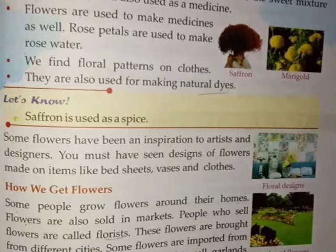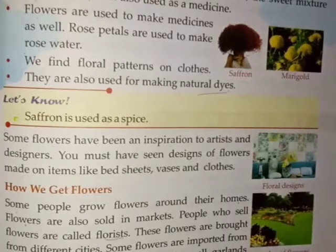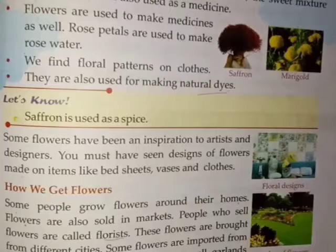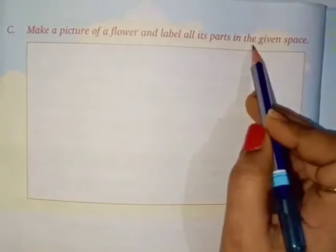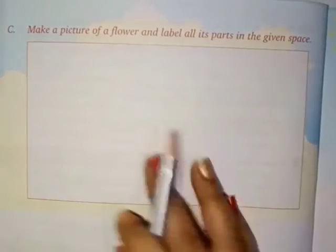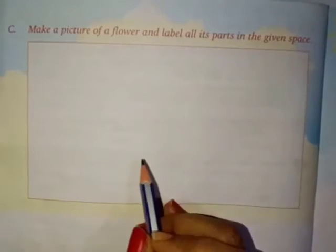That completes your lesson on flowers and their uses. For your activity, go to page number 72, activity C. Make a picture of a flower and label all its parts in the given space, using the diagram we covered. Your homework is to read the last chapter fully and complete activity C. I will see you in the next class — till then, take care and have a nice day.